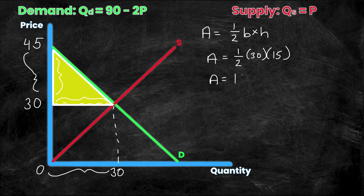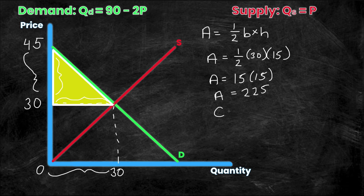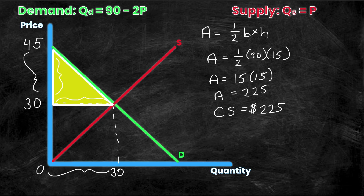One half times 30 is 15, so the next line is 15 times 15, which is 15 squared, which equals 225. The area of this triangle is 225, and therefore the consumer surplus equals 225 as well. The unit for consumer surplus is dollars, because we're talking about how much the consumer saves based on willingness to pay. So the consumer surplus is the area of this yellow triangle: $225.